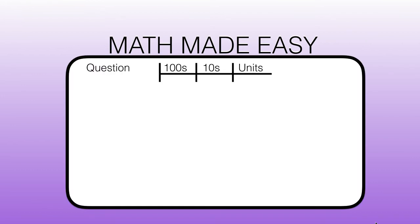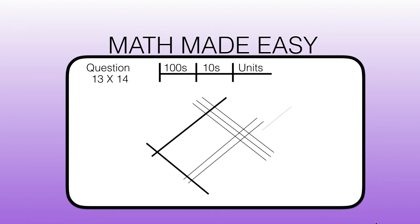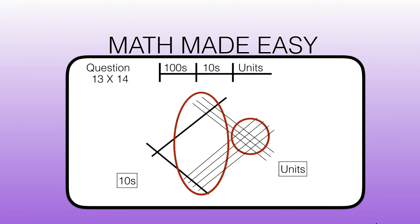The higher the numbers, the more space you are likely to need to map it out properly, so it doesn't become confusing which lines belong in which section. As this question is 13 times 14, we are going to draw it out at a slightly flatter angle. We are going to draw 1 thick line to represent how many tens there are in 13, then 3 thinner lines to represent the 3 units from the top left. Then 1 thick line for the tens in 14 and 4 thinner lines for the 4 units from the top right. We draw circles around where thin lines meet thin lines for units, where thin lines meet thick lines for tens, and where thick lines meet thick lines for hundreds.